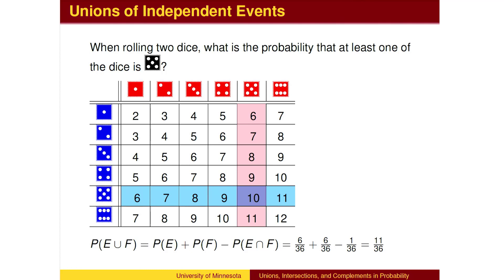We are now ready for a slightly more detailed formula for unions of independent events. When rolling two dice, what is the probability of getting a 5 on at least one of the two? This can be read using the word OR. We need to get a 5 on the blue die OR a 5 on the red die. There are 6 outcomes in the blue row. There are 6 outcomes in the red column. But we have over-counted.